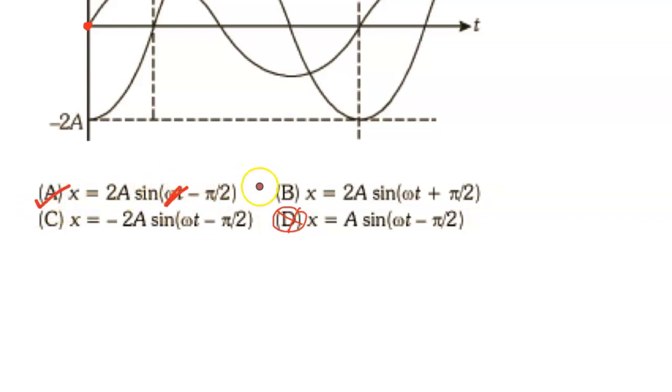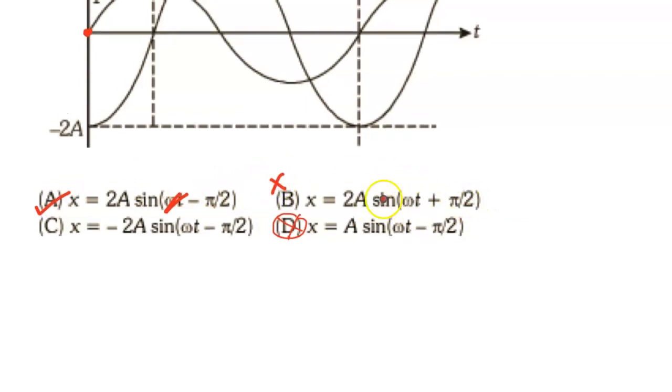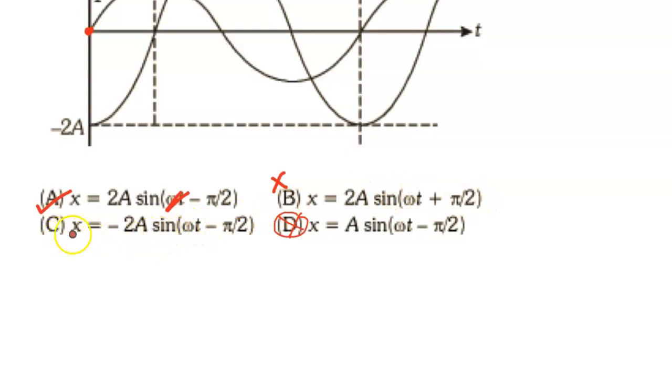Obviously B is wrong, because if you put t = 0, you will get sin(π/2), that is +1. If you put t = 0 in this equation, you will get sin(-π) which becomes -1, and -1 times -2A is +2A. So this is also wrong. So correct answer is A.